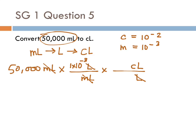The last term is centiliters to liters. So centi is on the top, and then we're going to write what it means on the bottom. Centi means 10 to the minus 2, so that's 1 times 10 to the minus 2.